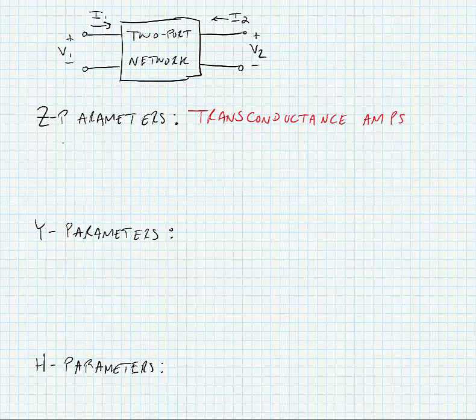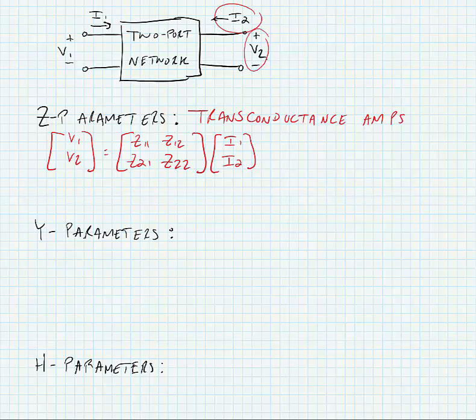Z parameters are given by the following expression. So what we're doing is multiplying an impedance matrix by a current matrix in order to find a voltage matrix. In other words, what we're trying to do is find the parameters of this unknown network to figure out what the network does to input voltages and input currents.